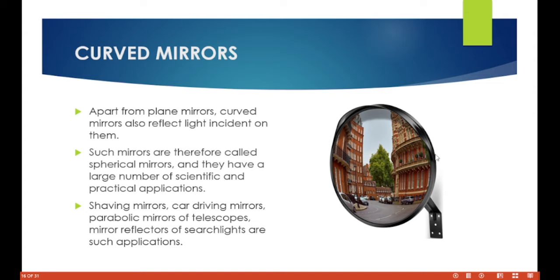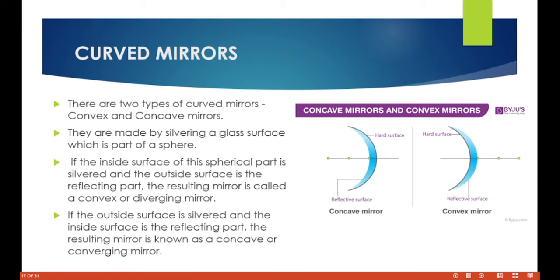Examples of curved mirrors include shaving mirrors, car driving mirrors, parabolic mirrors of telescopes, and mirror reflectors of searchlights. We are very comfortable using our driving mirrors to check ourselves, because sometimes a curved mirror can shape your head differently from the way you normally look. So these are the curved mirrors — we have the concave mirror and we have the convex mirror.